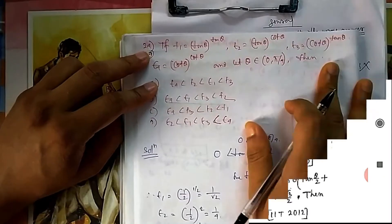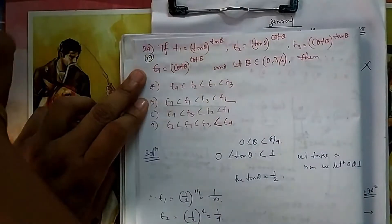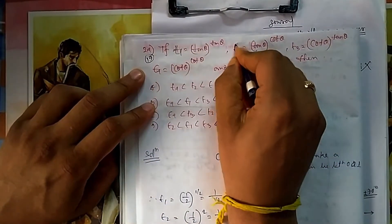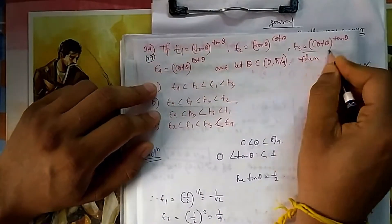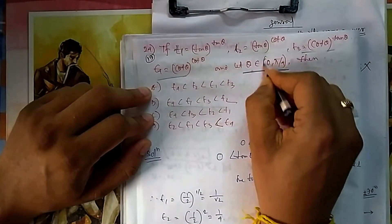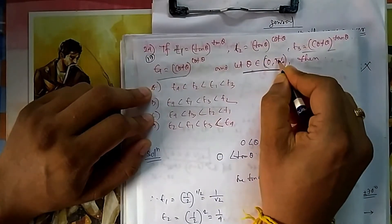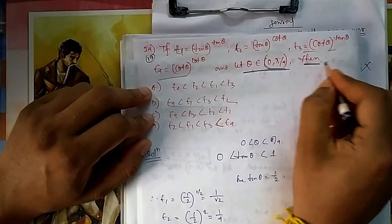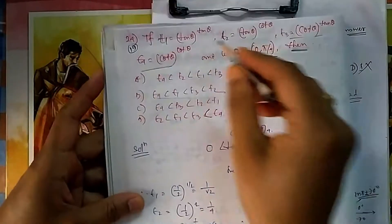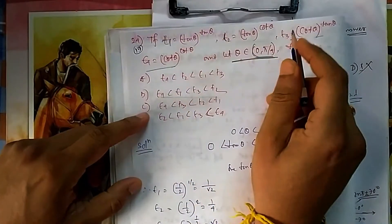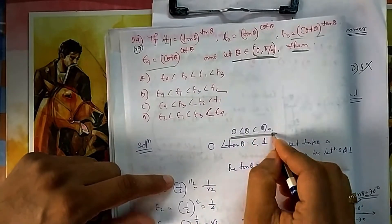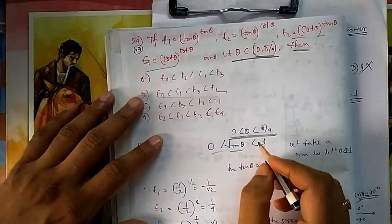They have given t1, t2, t3, t4, and theta is between 0 to π/4, that is 0 to 45 degrees. The question asks which one is greater and which one is smaller. Since theta is between 0 to π/4, your tan theta lies between 0 to 1.